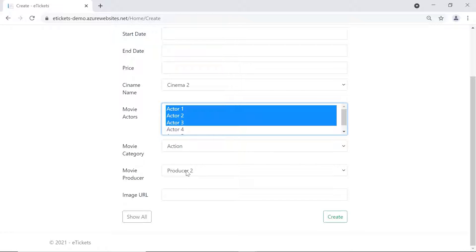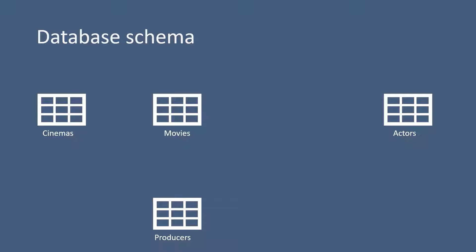In database relationship terms, between the cinemas and the movies we have a one-to-many relationship — a cinema can have multiple movies but a movie can be purchased from a single cinema. The same goes for producers: a movie has a single producer but a producer can produce multiple movies. But between movies and actors we have a many-to-many, because a movie could have multiple actors and an actor could play in multiple movies. When we have a many-to-many relationship we split it into two one-to-many relationships.